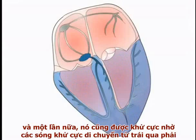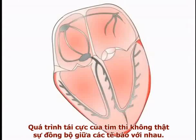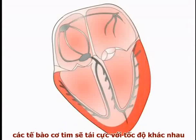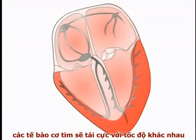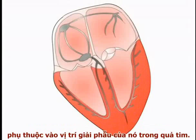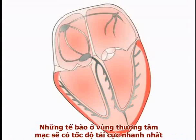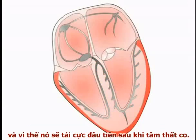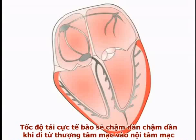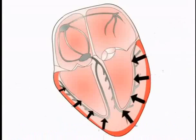Cardiac repolarization is not truly propagated between cells. Cardiac myocytes repolarize at different rates depending on their anatomical location within the heart. Within the ventricular wall there is a gradient in the rate of cellular repolarization: cells in the epicardial region have the fastest rate of repolarization and repolarize first following ventricular contraction, with the rate of cellular repolarization progressively slower as we move from the epicardium towards the endocardium.